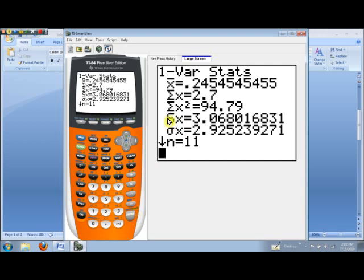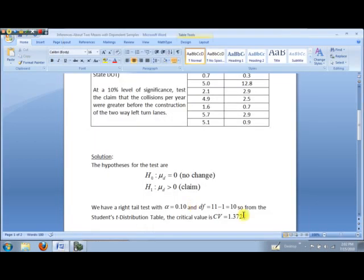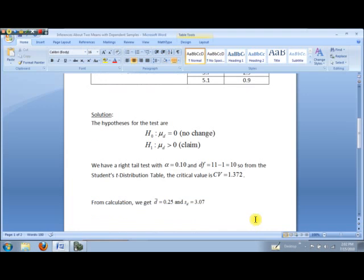So I went ahead and recorded those values. Let's take a look at that. Rounding to two decimal places following the conventions in the text, we get D bar is 0.25, S sub D is 3.07.